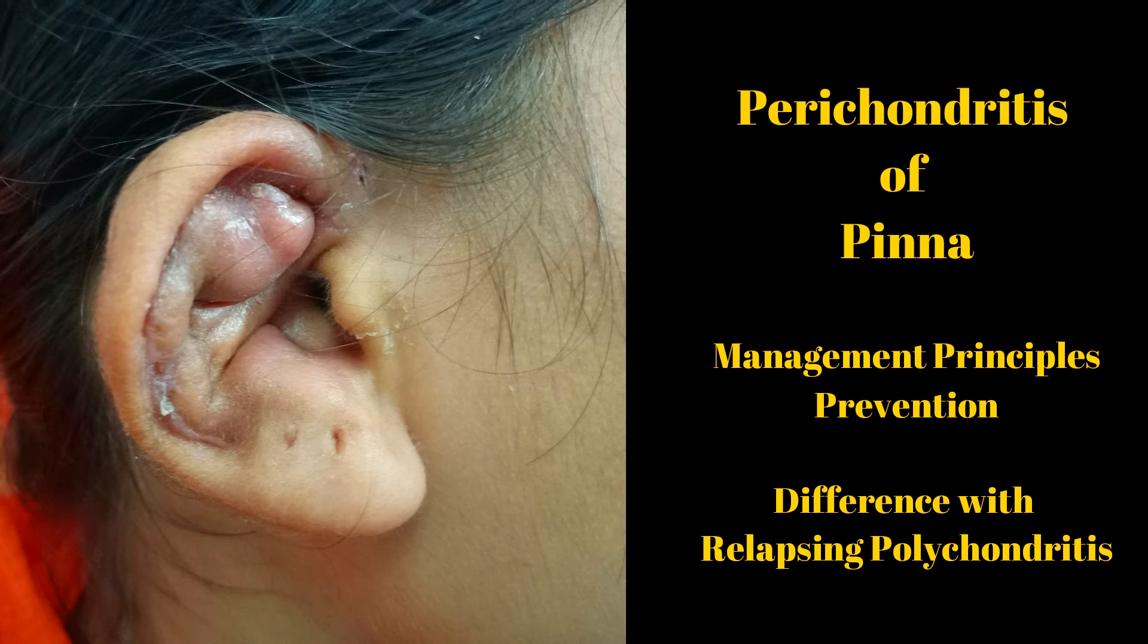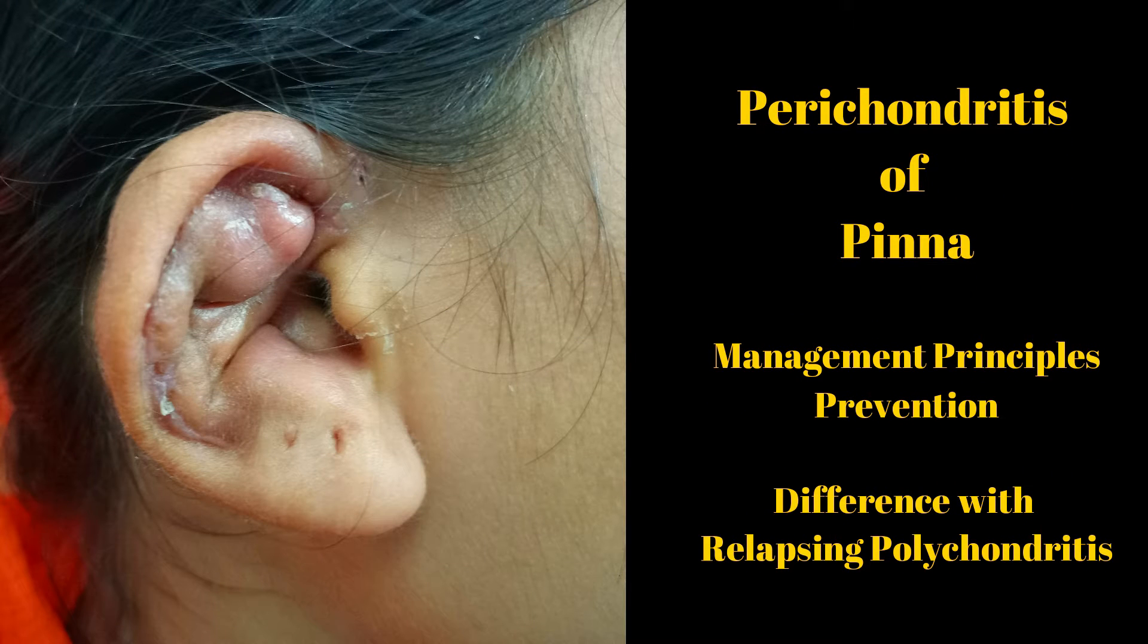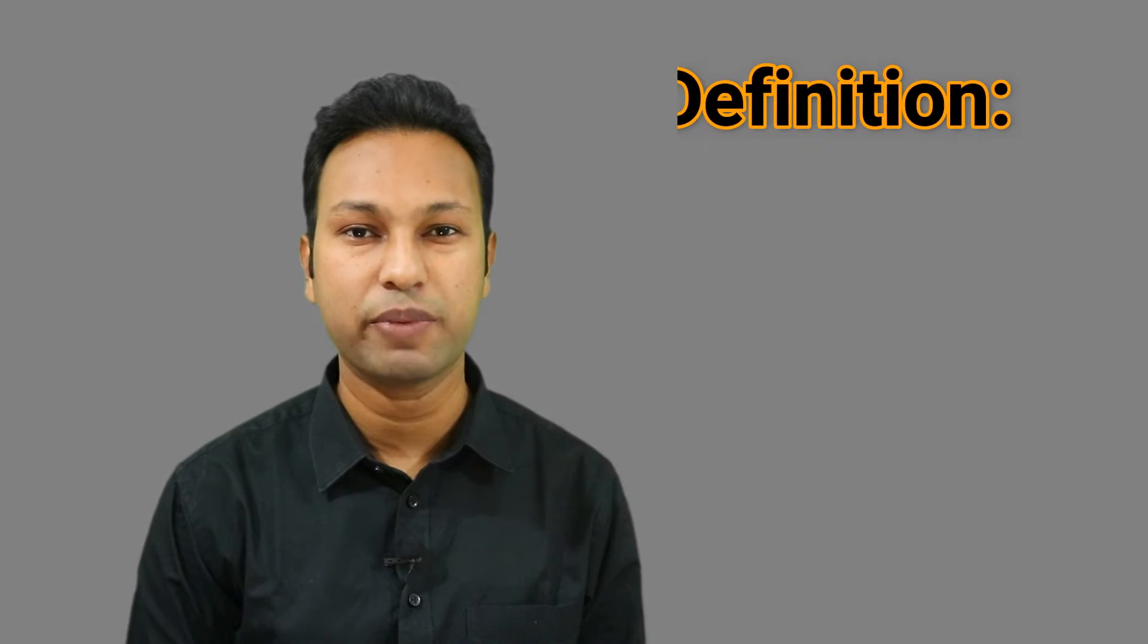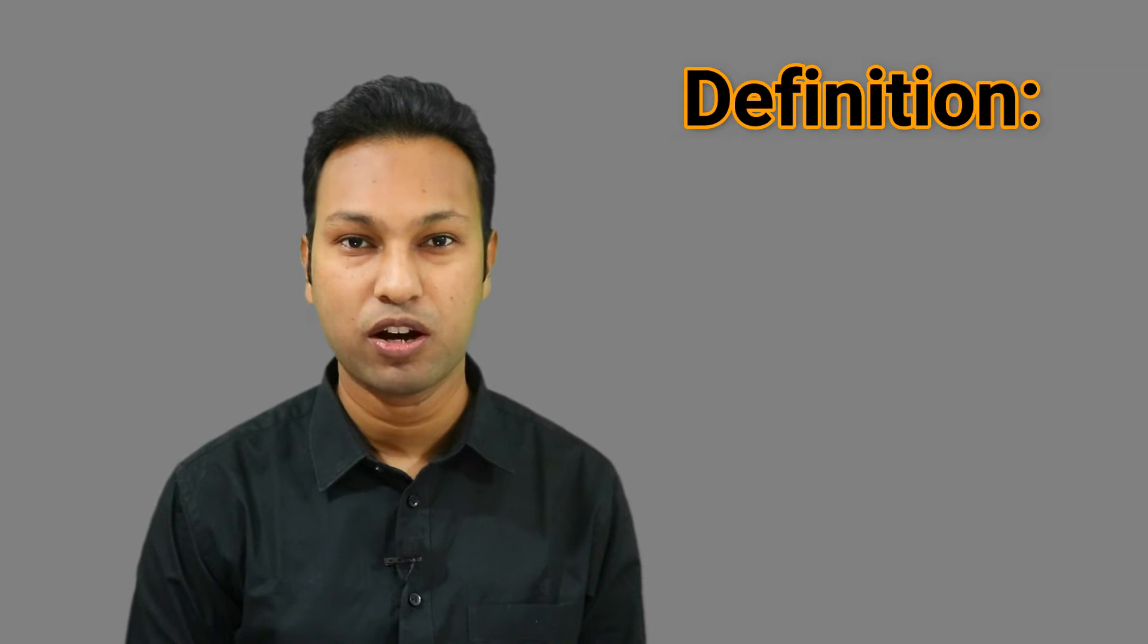So what is perichondritis of pinna? It is the inflammation of the perichondrium of the pinna. In this condition, the ear lobule is not involved.